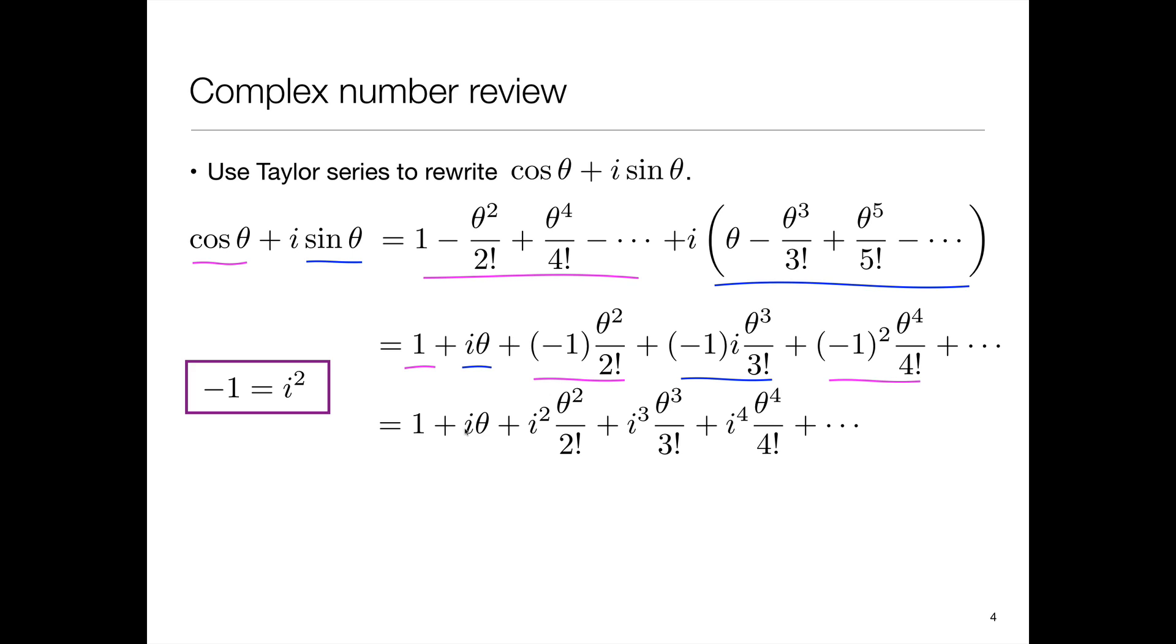a progression that goes 1 i theta. And this minus 1 can be replaced by i squared. Minus 1 times i can be replaced by i cubed. Minus 1 squared can be replaced by i to the 4th. And we can keep on doing this indefinitely.